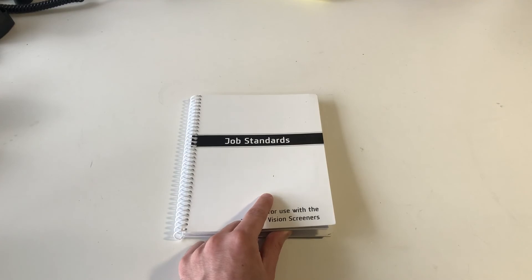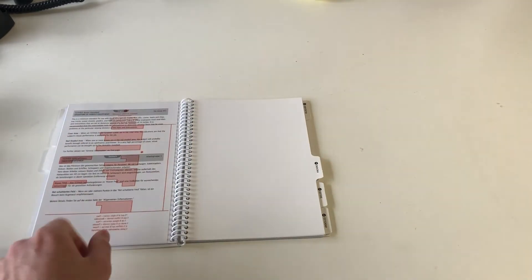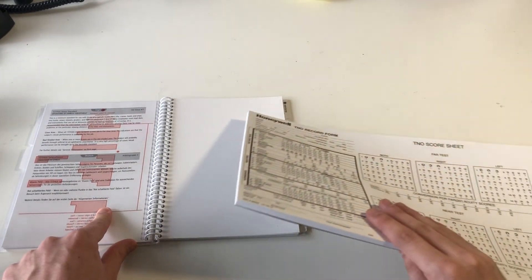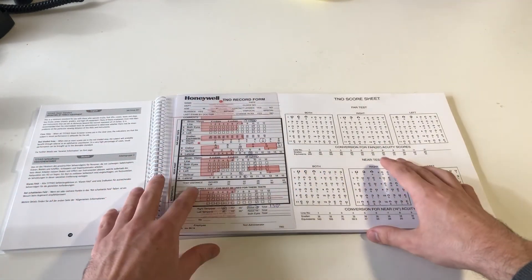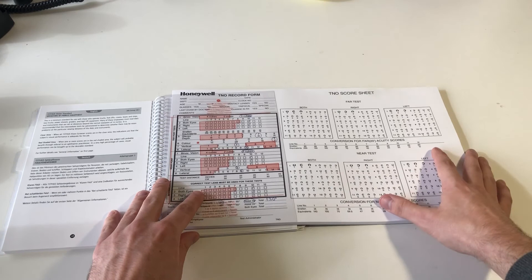Compare your record form to the proper section of the job standards book. If any of the results land in the pink areas of the overlay, it may be indicative of a vision issue.